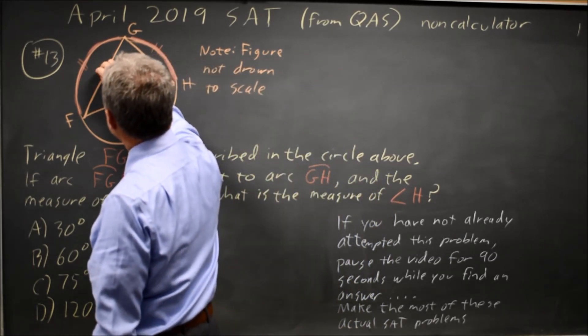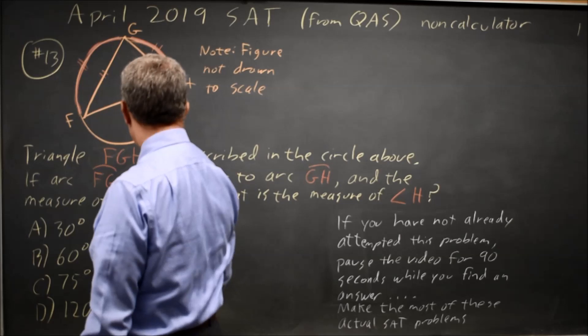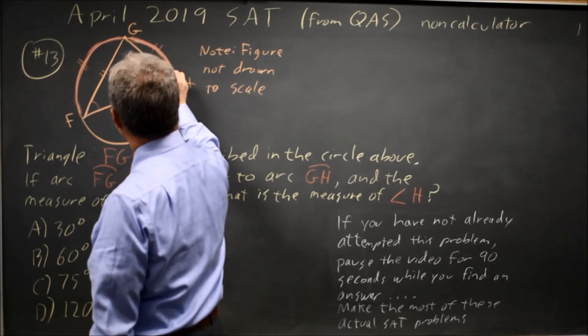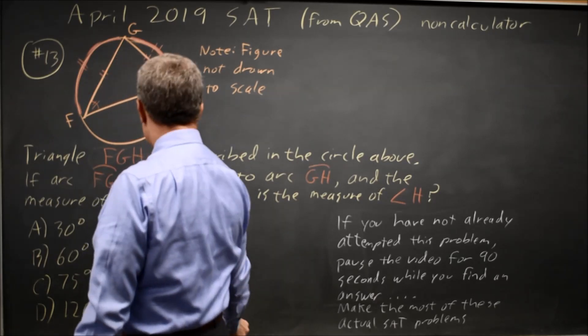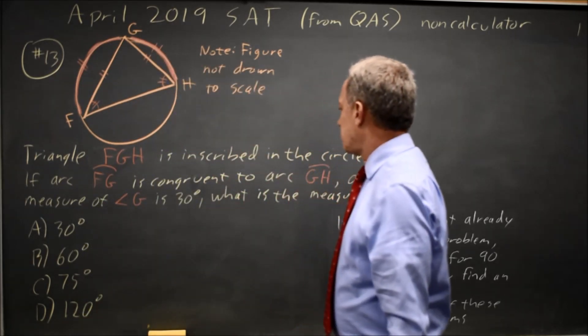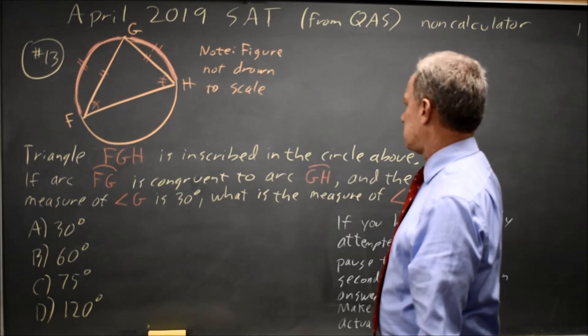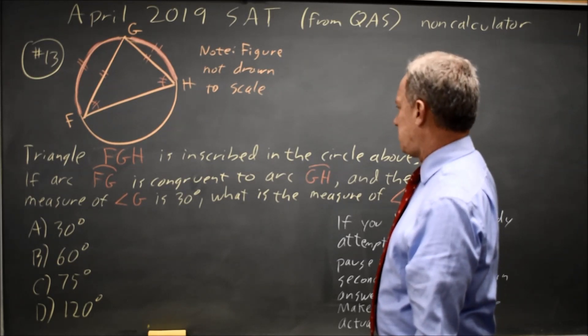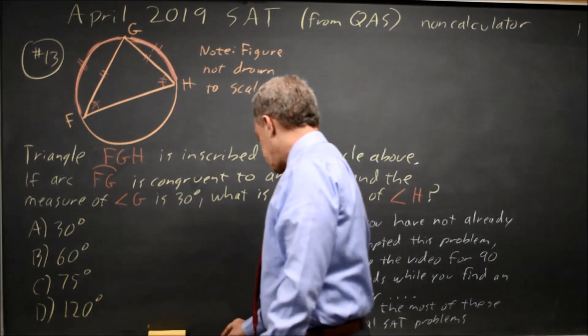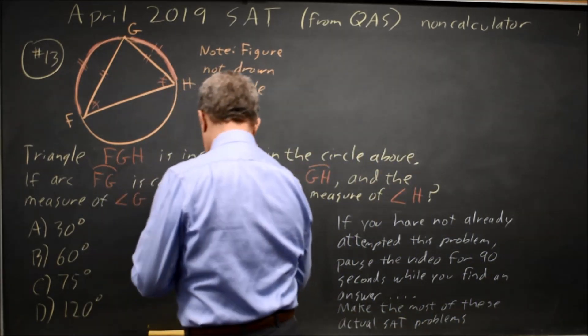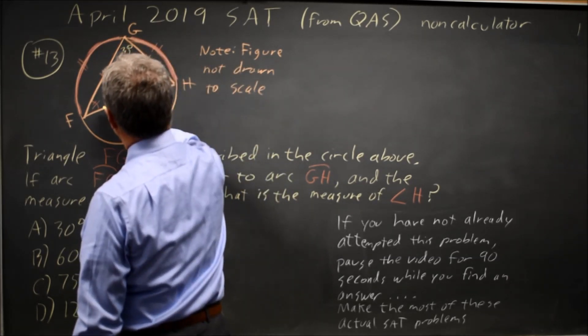If those arcs are congruent, then these two sides of the triangle are congruent. And if two sides are equal, the opposite angles are equal. So the angles at F and H are equal. FG and GH are congruent, and angle G is 30 degrees.